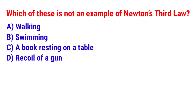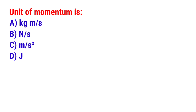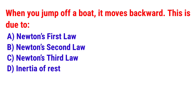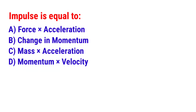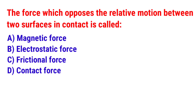Next question: Which of these is not an example of Newton's third law? The answer is option C — A book resting on a table. Next question: When you jump off your boat, it moves backward. This is due to? The answer is option C — Newton's third law. Next question: The force which opposes the relative motion between two surfaces in contact is called? The answer is option C — Frictional force.